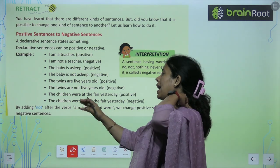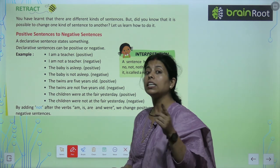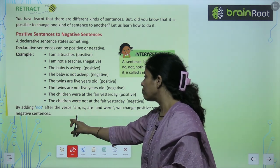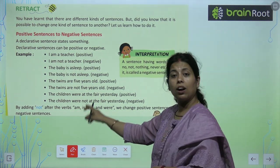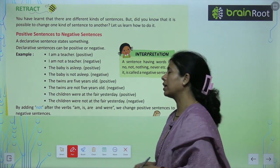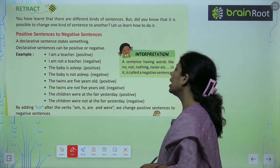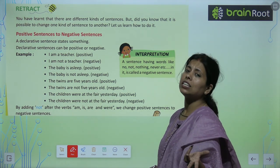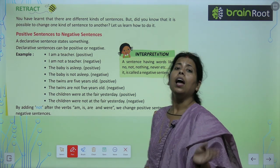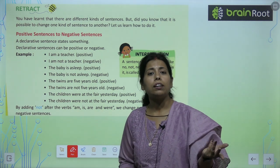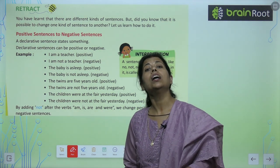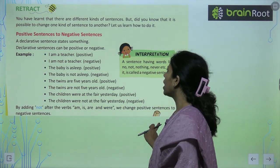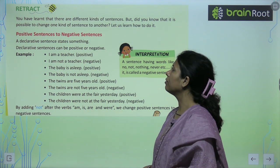तो हमने क्या करा — by adding 'not' — is not, am not, are not, or were not — क्या आगे 'not' लगाके हम इसको negative में change कर सकते हैं। हम इसको negative में change कर सकते हैं। चलिए इसकी exercise पर आते हैं, directly friends।